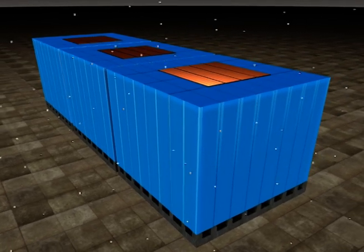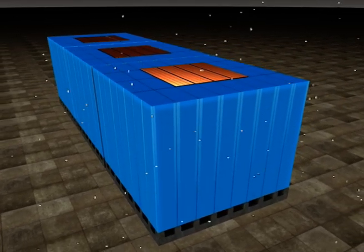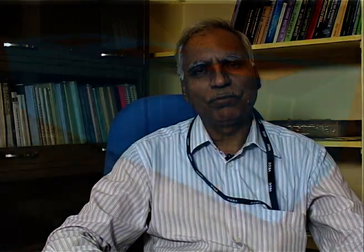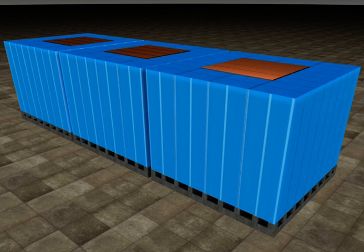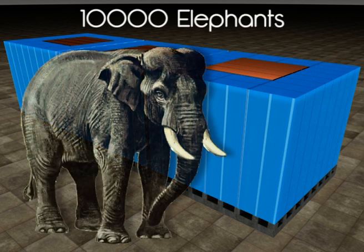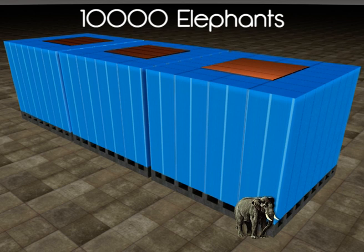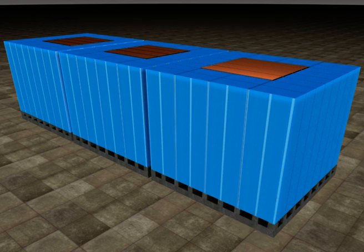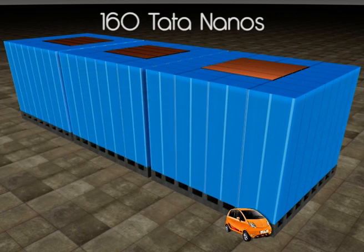Similarly, the ICAL can also look towards the core of the Earth. The magnet, weighing 52,000 tons, will be the biggest in the world after it is constructed. The weight of the ICAL is equivalent to about 10,000 elephants, and the area of the ICAL would be the area occupied by about 160 Tata Nano cars.